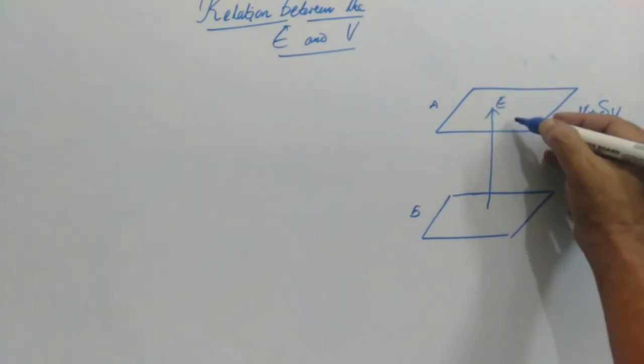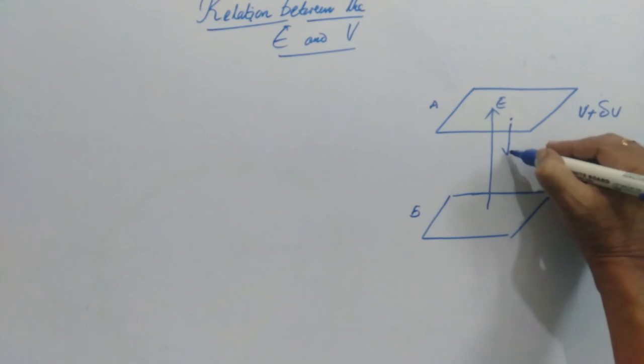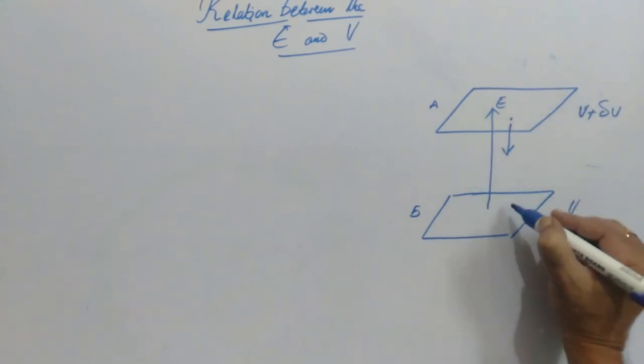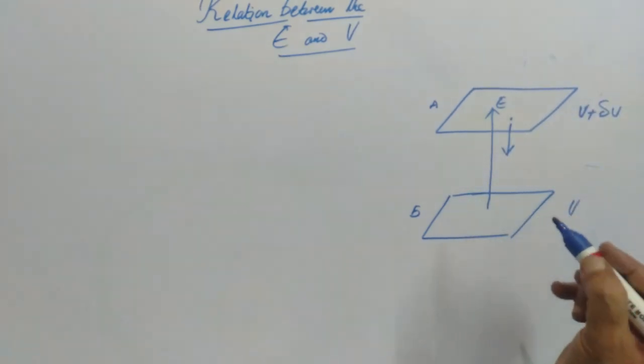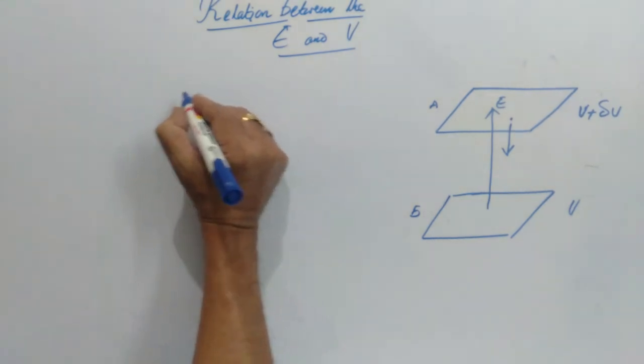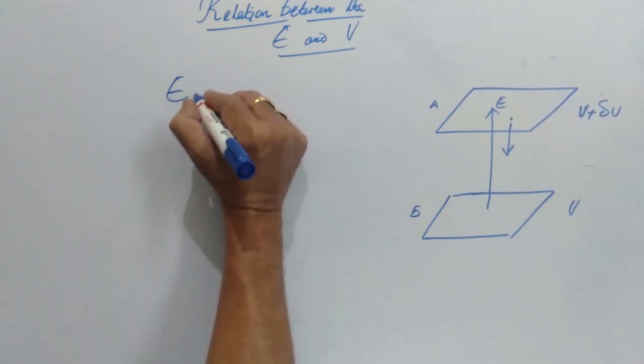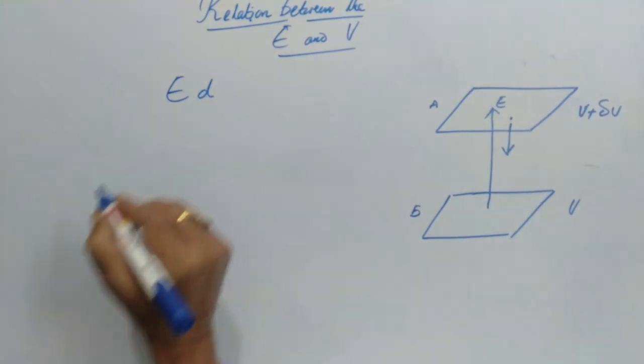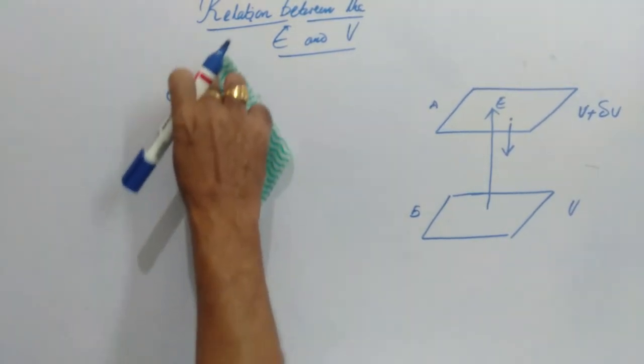if we want to move a unit positive charge from A to B, then we have to do work. We know that the work done per unit positive charge is E times delta L.